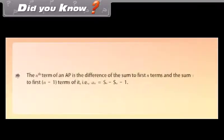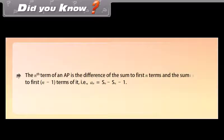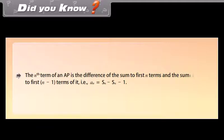Did you know? The nth term of an AP is the difference of the sum to first n terms and the sum to first (n-1) terms of it. That is, a(n) = S(n) - S(n-1).